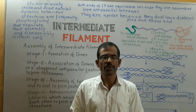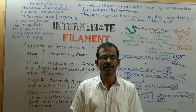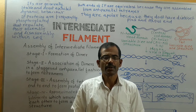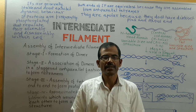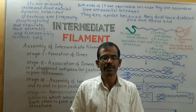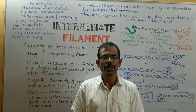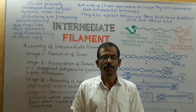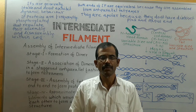The cytoskeleton is a structure that helps cells maintain their shape and internal organization. It also provides mechanical support that enables cells to play essential roles like cell division and cell movement. The cytoskeleton consists of three major components: microtubules, actin filaments, and intermediate filaments.